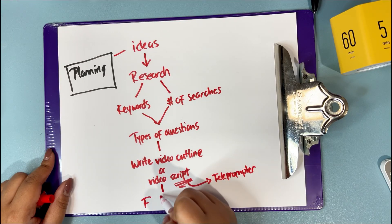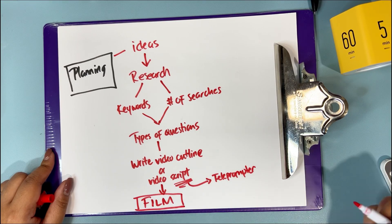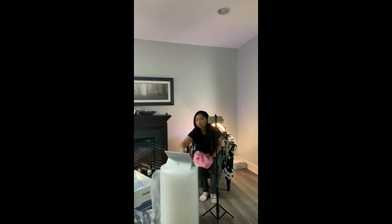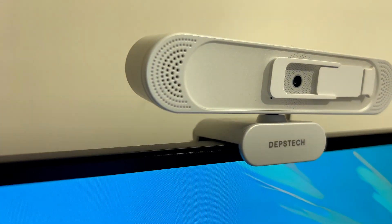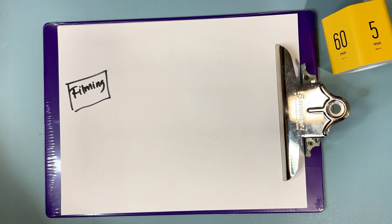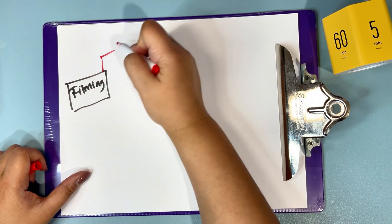Once you have your outline and script ready, it's time to move on to filming. In the beginning, I filmed my videos with my iPhone 12 Pro and then I transitioned to using a webcam for filming. Honestly, use any camera you have. Smartphones nowadays have really great quality.